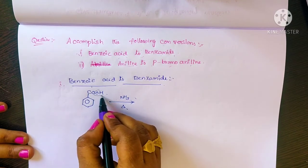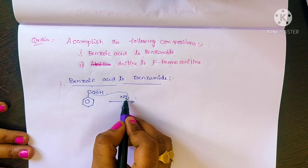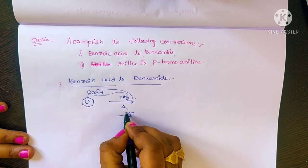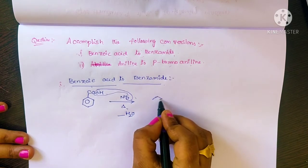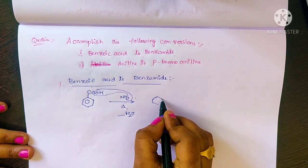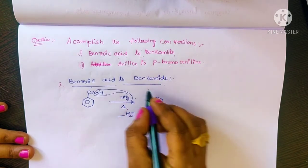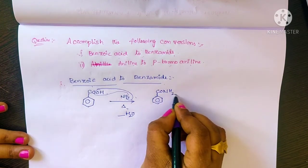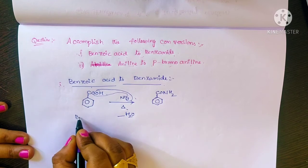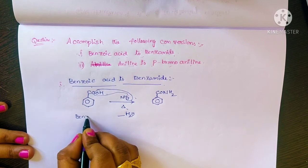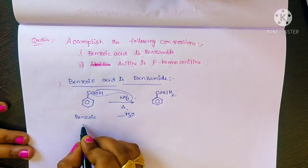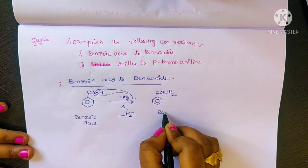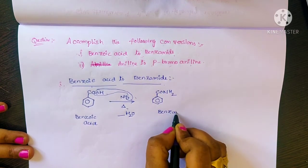This benzoic acid reacts with ammonia and heating to remove a water molecule. The OH group in the COOH of benzoic acid and hydrogen in ammonia combine to remove one water molecule. The remaining NH2 is added, giving CONH2 — a benzene ring containing CONH2 — which we call benzamide.